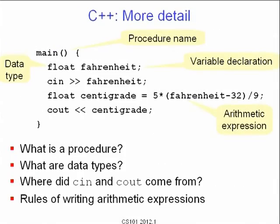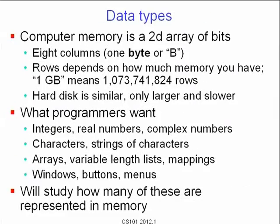What is a data type? We said Fahrenheit and centigrade were floating-point numbers or floats. A computer memory is fundamentally a 2D array of bits — 8 columns wide, one byte. The number of rows depends on how much main memory you have: one gigabyte means slightly above one billion rows. Hard disk is similar in look but larger and slower to access. What programmers want are integers, real numbers, complex numbers, characters, strings of characters for names and addresses in databases, arrays, matrices, variable-length lists, mappings between people and their ages, and eventually user interfaces like windows, buttons, and menus. During this course we will study how these data types are mapped to representations in RAM, though most of the time we are customers using high-level data types.